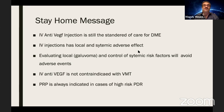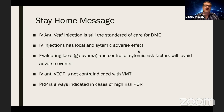The take-home message: intravitreal anti-VEGF is still the standard of care — we should not rush to any other drug. Intravitreal injection has local and systemic adverse effects, and central retinal artery occlusion is one of the most serious, along with endophthalmitis. Central artery occlusion may actually be more serious because if caught late, vision is gone. Evaluating local risk like glaucoma and controlling systemic risk factors may avoid adverse events. PRP is always indicated in high-risk proliferative diabetic retinopathy.